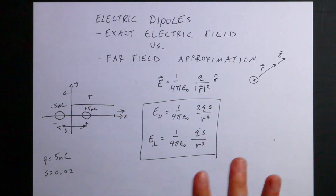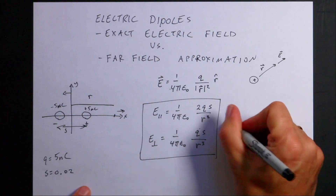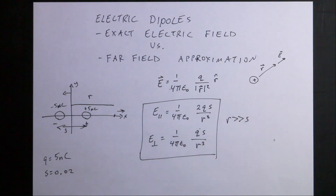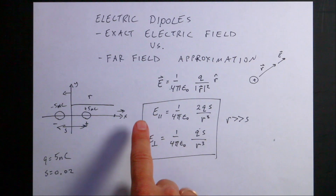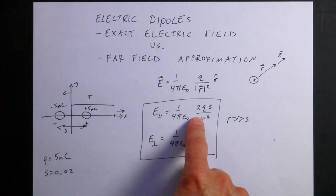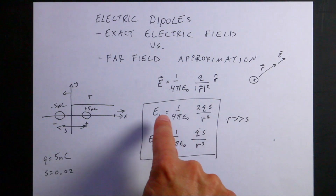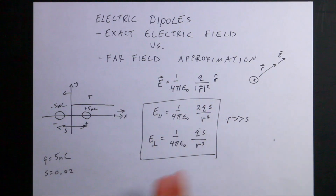These far-field equations assume that R is much greater than S. If that's not true, these equations don't work. So what I want to do is calculate the electric field exactly along this axis and compare it to the approximation. I'll derive an expression for the exact electric field, then plot both in Python as a function of distance so we can see what happens. Let's get started with the exact electric field due to a dipole along the axis.